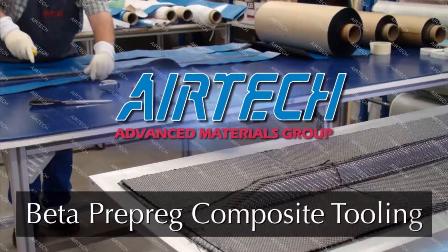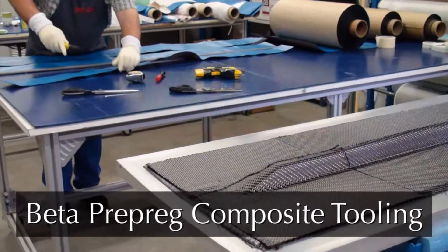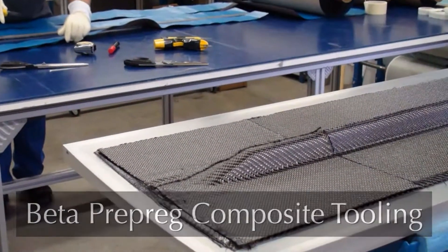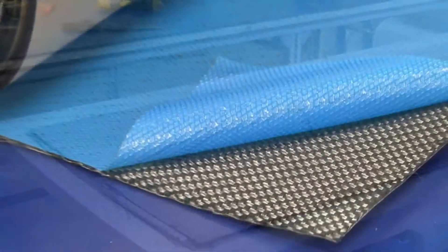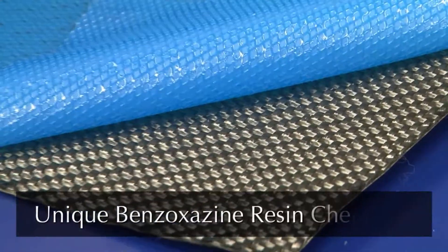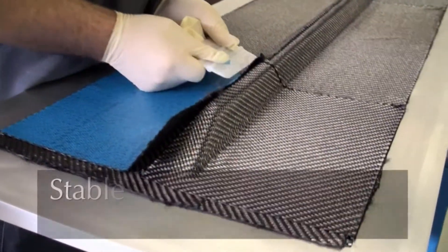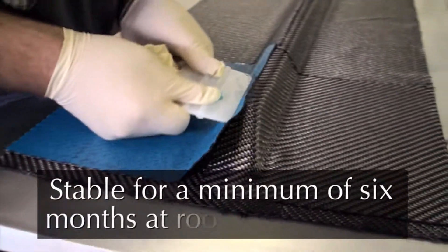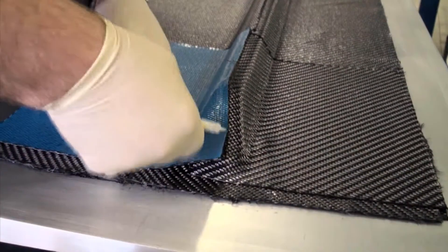The new beta prepregs contain the latest resin nano toughening technology to provide outstanding ease of use and performance. It's based on benzoxazine resin chemistry. Beta prepregs are stable for a minimum of six months at room temperature with exceptionally long outlife.